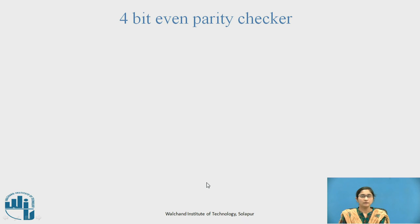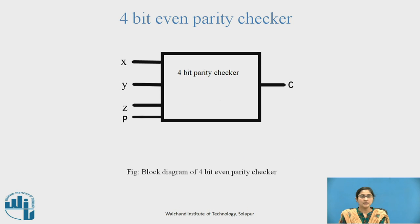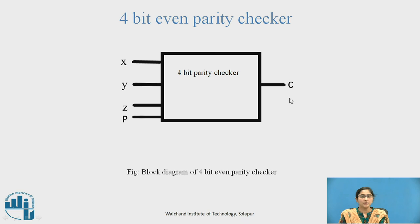4-bit Even Parity Checker. This is the block diagram of the 4-bit Even Parity Checker. To this block, X, Y, Z — three inputs — along with the even parity bit P from the generator are given. At the output, we get C as the Parity Error Check bit.